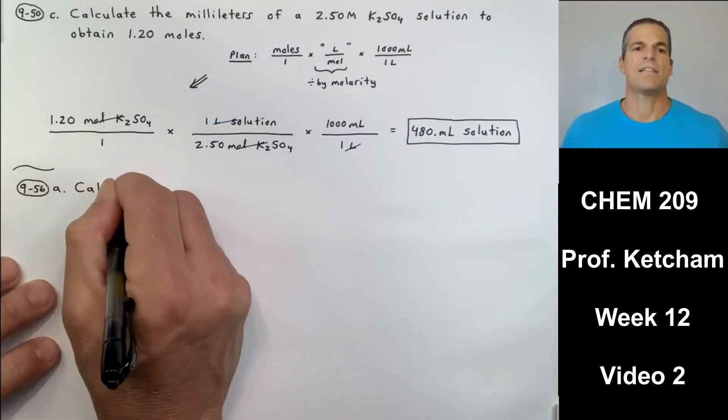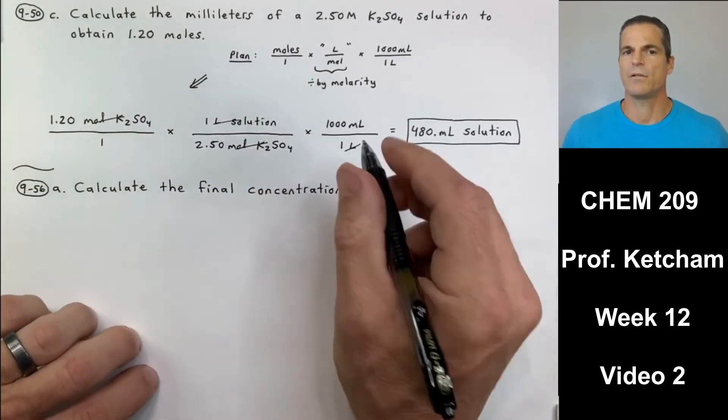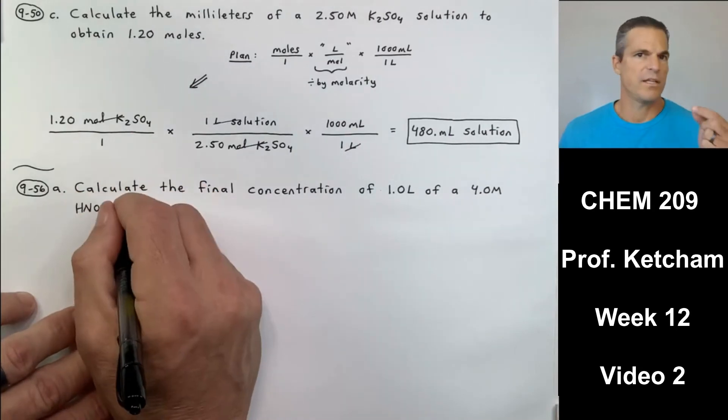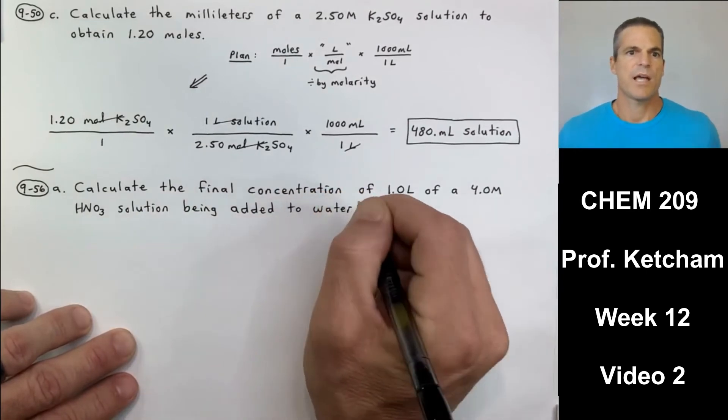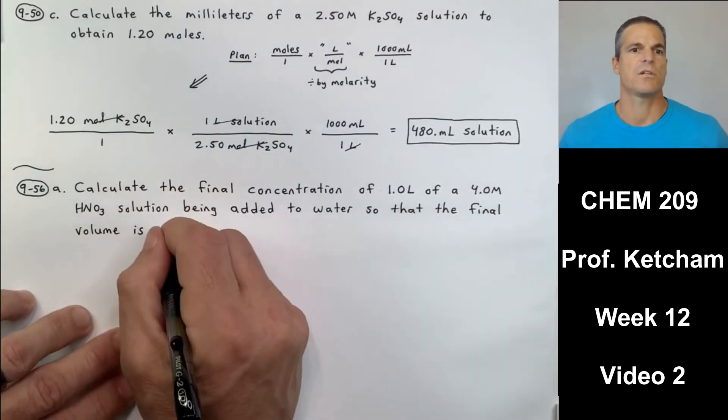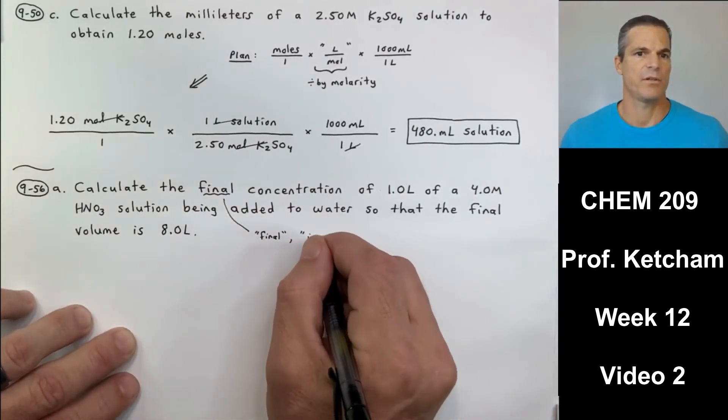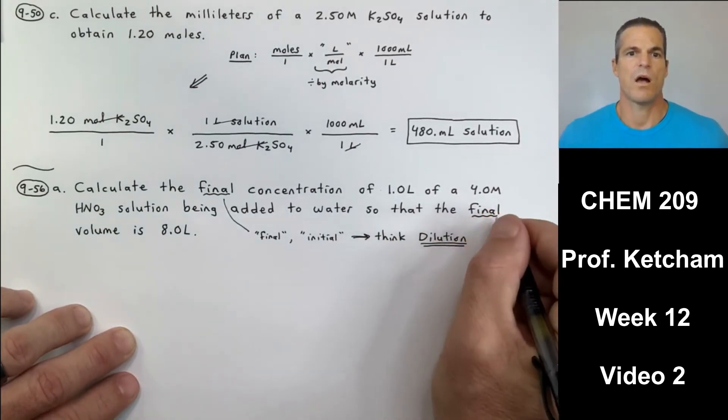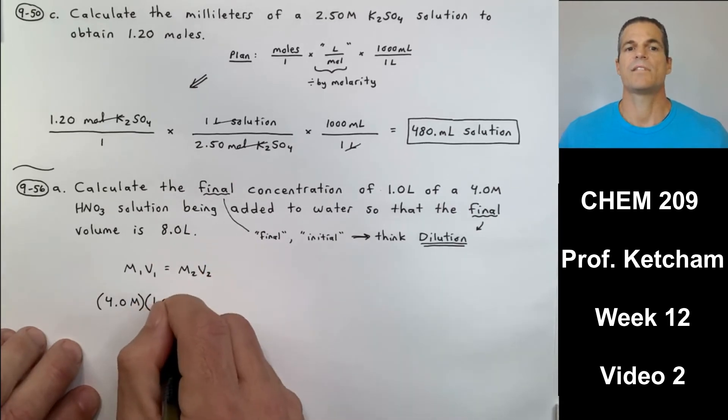56A wants us to calculate the final concentration. See that word final? That means there was also an initial, right? Initial concentration. A catch word like final or initial makes me think of dilution. Before, after, initial, final. Calculate the final concentration of 1.0 liters of a 4.0 molar HNO3 solution being added to water so that the final volume is 8.0 liters. So I'm just reiterating here, words like final and initial, obviously a word like diluted or concentrated makes you think of the dilution equation. M1 V1 equals M2 V2.